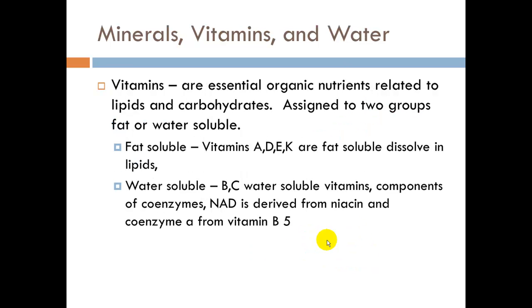Vitamins are essential organic nutrients related to lipids and carbohydrates. They are assigned to two groups: fat-soluble or water-soluble. Fat-soluble vitamins — remember these as ADEK — are dissolved in lipids. Water-soluble vitamins are B and C. Water-soluble vitamins are components of coenzymes: NAD, which makes NADH in the Krebs cycle or goes into the electron transport system, is derived from niacin, and coenzyme A comes from vitamin B5. B vitamins are pretty much essential as far as metabolism goes.